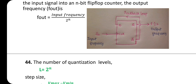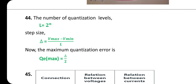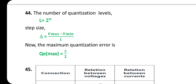The number of quantization levels: L = 2^n. Step size = (V_max − V_min) / L, where L is the number of quantization levels. Maximum quantization error: Q_e(max) = step size / 2.